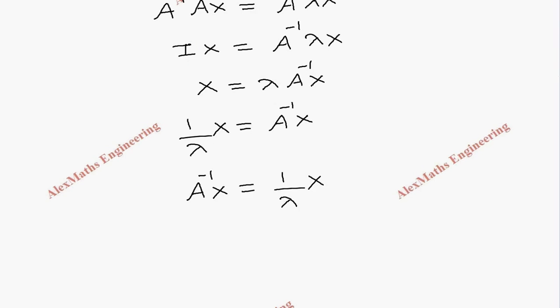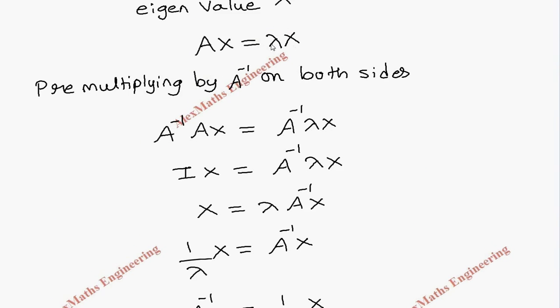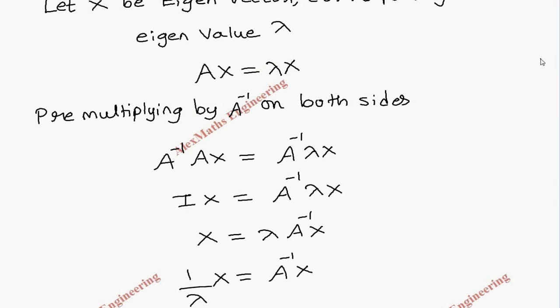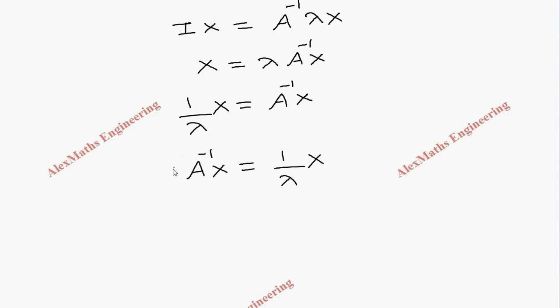In the starting, we had AX equal to lambda X, which means for the matrix A, the eigenvalues are lambda. Similarly, for the matrix A inverse, the eigenvalues are 1 by lambda.